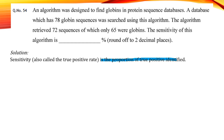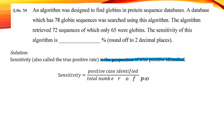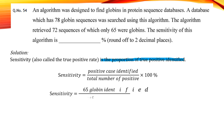Here is the formula: sensitivity equals positive cases identified divided by total number of positives, multiplied by 100. In our question, 65 positives were identified out of a total of 78 globin sequences. So our answer is 83.33%.